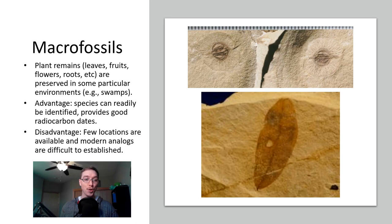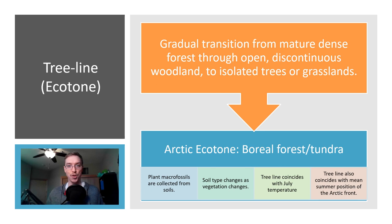For treeline or ecotone regions we see this gradual transition from mature dense forests through open discontinuous woodlands to isolated trees and/or grasslands. If this was transitioning to an arctic or ecotone, a more glaciated one, a boreal forest or tundra, we'd see we could use plant macrofossils that are collected from soils. Soil type changes as vegetation changes. Tree line coinciding with July temperatures and tree lines also coinciding with mean summer positions of the arctic front.